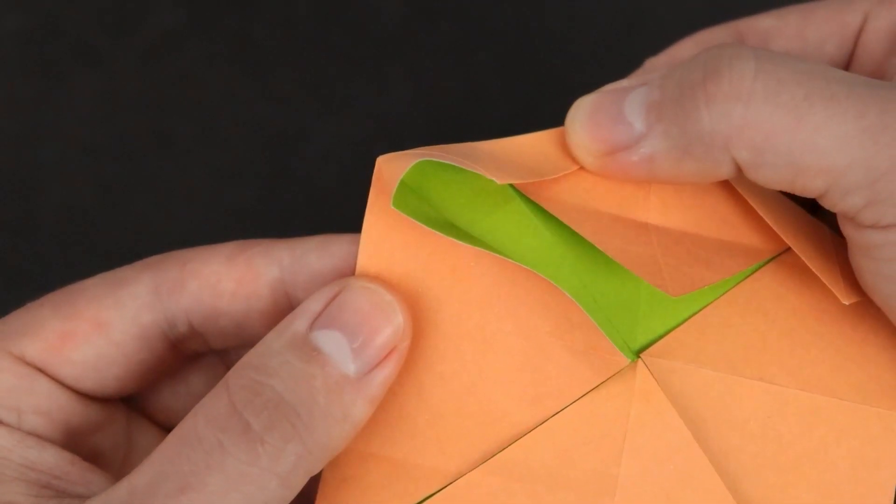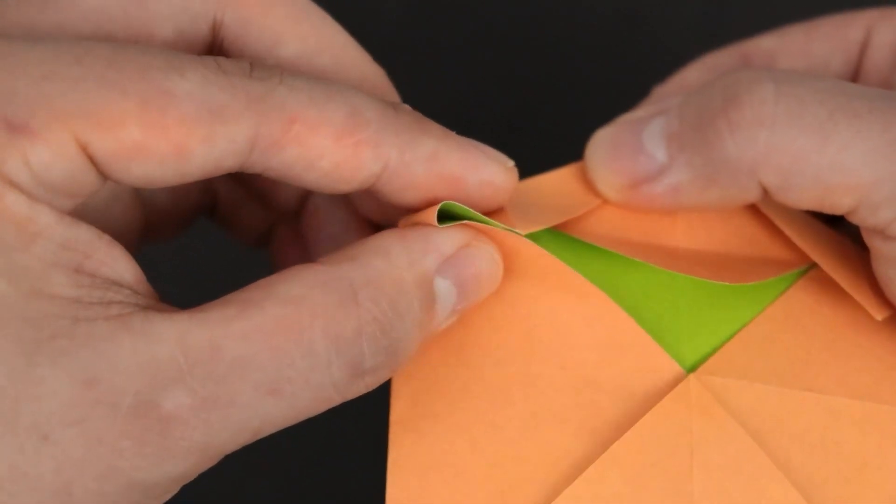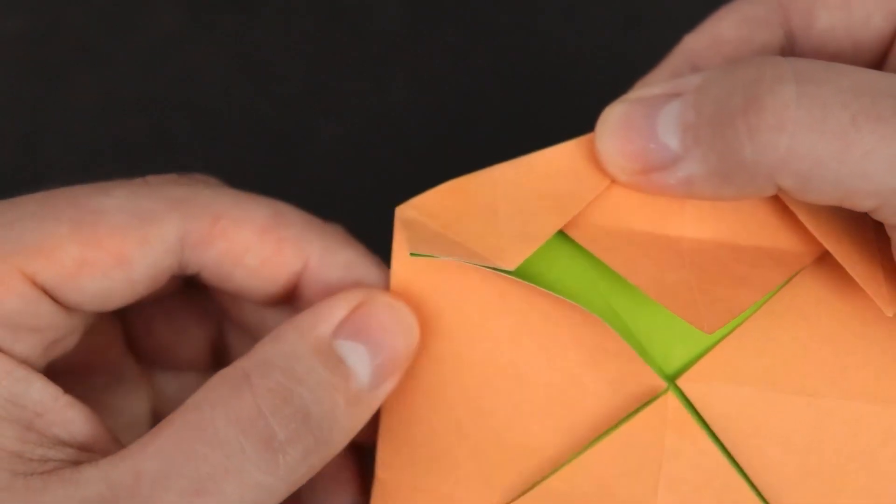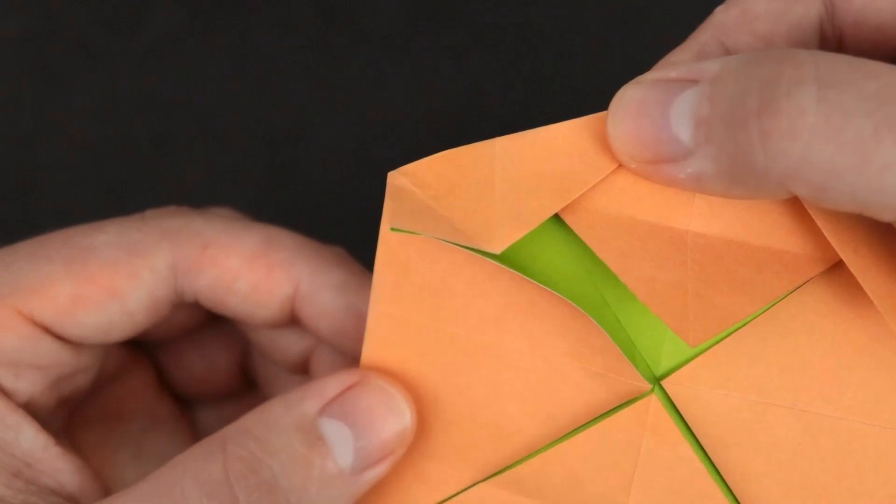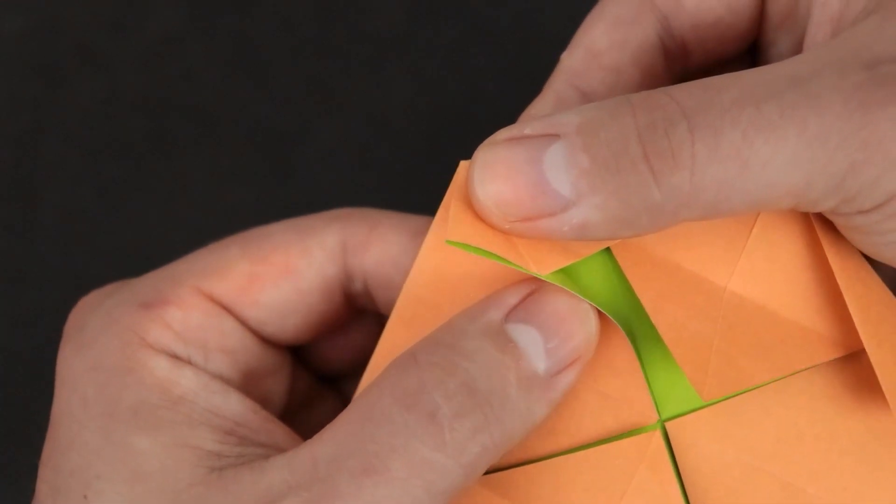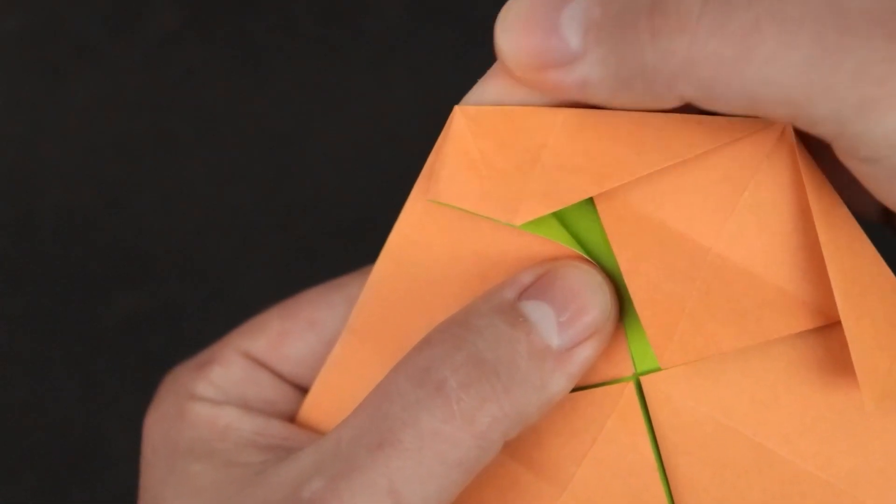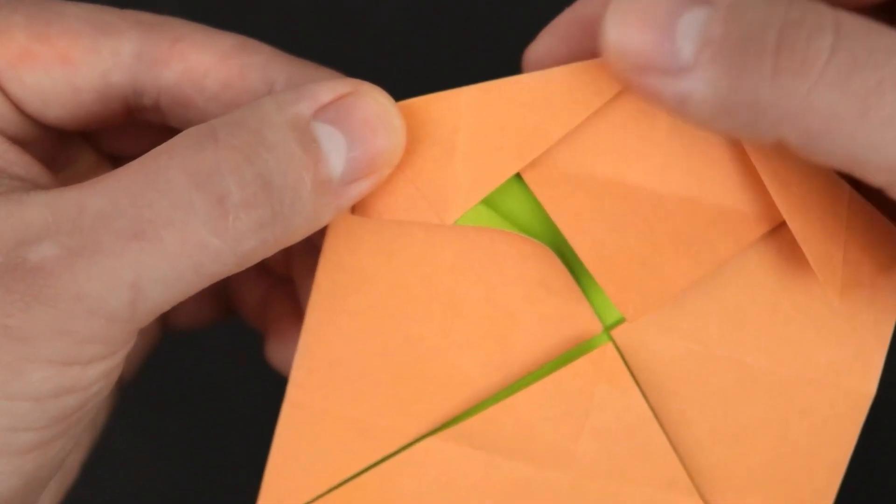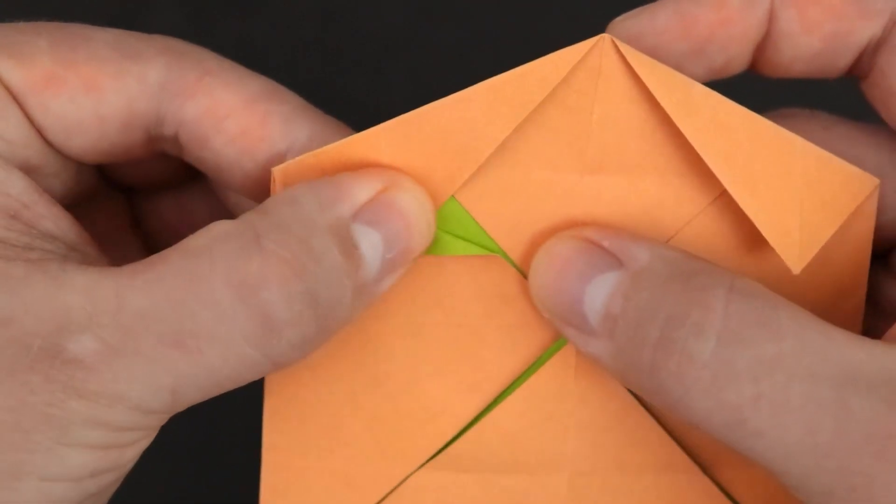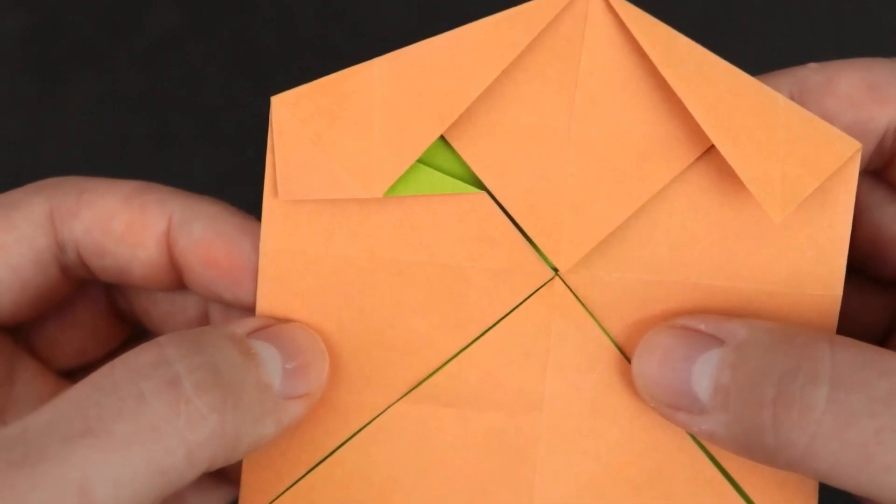And then we'll close what's left by bringing the edges together. And bring the paper down to flatten. And we just made the first eye.